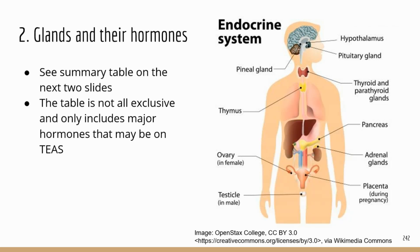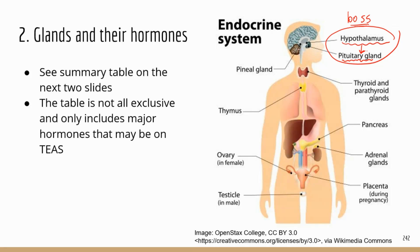Here are the important glands you may see questions about on the TEAS. We're going to start with the boss glands — the regulatory glands that normally regulate the other glands. They're the top-tier glands, located in the brain: the hypothalamus and the pituitary gland, which sits right below the hypothalamus. The hypothalamus secretes hormones that regulate the secretion of the pituitary gland, so the hypothalamus is kind of the boss for the pituitary gland.